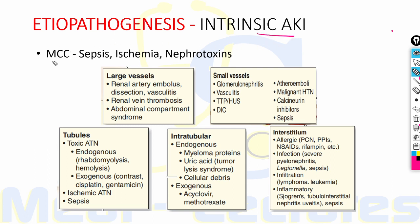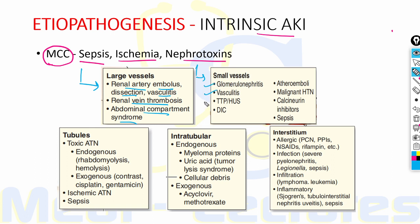The most common causes of intrinsic AKI include sepsis, ischemia, and nephrotoxins. Causes involving large vessels include renal artery embolus, dissection or vasculitis, renal vein thrombosis, and abdominal compartment syndrome. Diseases affecting small vessels include glomerulonephritis, vasculitis, TTP-HUS, disseminated intravascular coagulation, atherothrombi, malignant hypertension, calcineurin inhibitors, and sepsis. Diseases involving tubules include toxic ATN, ischemic ATN, and sepsis.